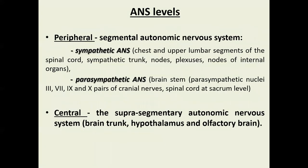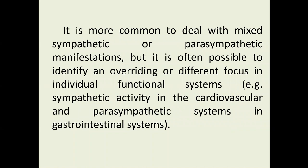The autonomic nervous system consists of two levels. The first level is the central level — the supra-segmentary autonomic nervous system. The lower level is the peripheral level — the segmental autonomic nervous system — which includes two main parts: the sympathetic and parasympathetic autonomic nervous systems. It is more common to deal with mixed sympathetic-parasympathetic manifestations, but it is often possible to identify an overrating of different focus in individual functional systems, such as sympathetic activity in the cardiovascular system and parasympathetic activity in the gastrointestinal system.